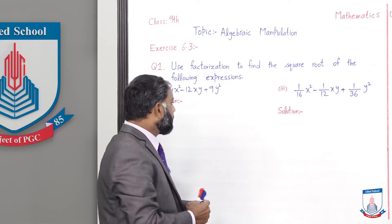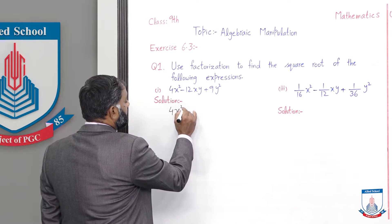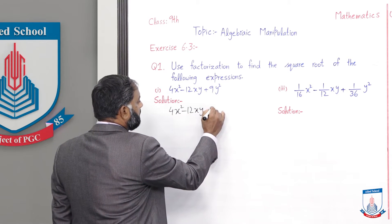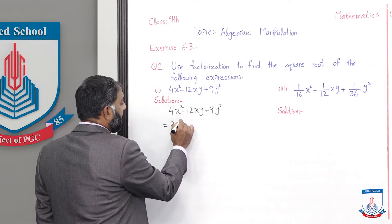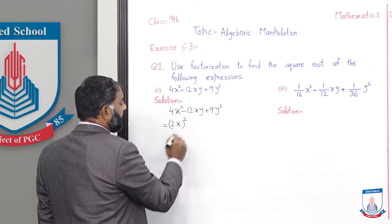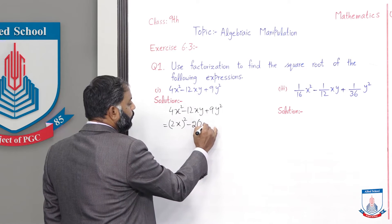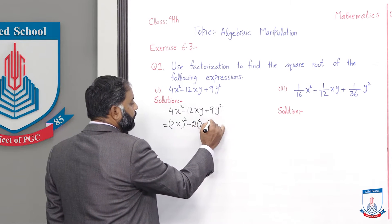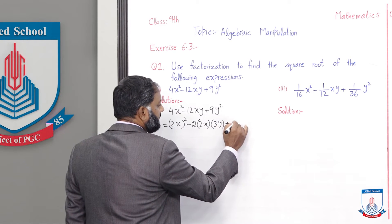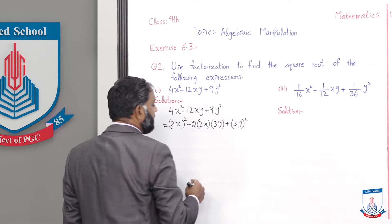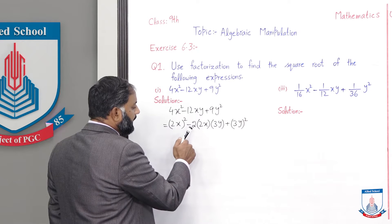अब part 1 solve करते हैं: 4x²-12xy+9y²। 4x² यानी (2x)² है। Middle term minus 2ab बनेगी — formula का a की value 2x है। Last term (3y)² है तो b की value 3y होजाएगी। Square खोलें: 4x² आ गई, factors multiply करें — 12xy middle term आई, और 9y² last term आई।